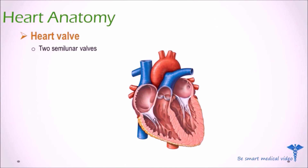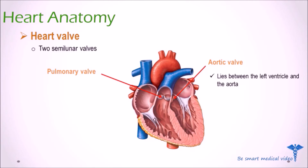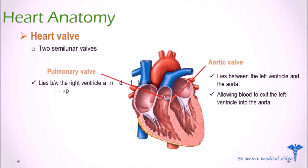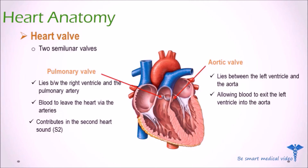Two semilunar valves: number one is the aortic valve, and second is the pulmonary valve. The aortic valve is situated between the left ventricle and the aorta, allowing blood to exit the left ventricle into the aorta when ventricular systole ends. The pulmonary valve lies between the right ventricle and the pulmonary artery and has three cusps. It allows blood to leave the heart via the arteries. The closure of the pulmonary valve contributes to the second heart sound, S2.